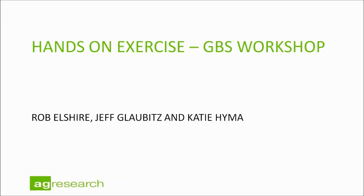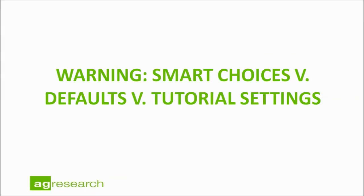This is a hands-on exercise for the GBS workshop presented at Palmerston North in New Zealand for agricultural research. This is part of a series of lectures and this is the hands-on portion. We want to re-emphasize that the defaults for the pipeline and the tutorial settings are absolutely wrong for your particular species. You need to carefully think about your particular situation and make smart choices as you go. Do not expect good results if you're using just the defaults or the tutorial settings.